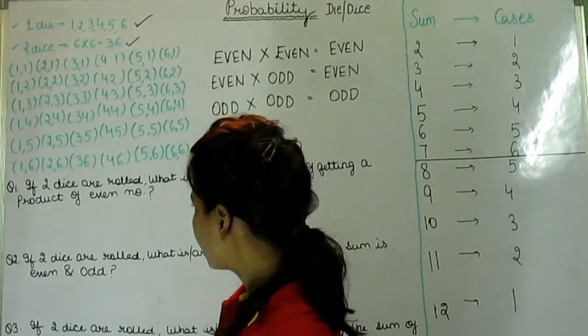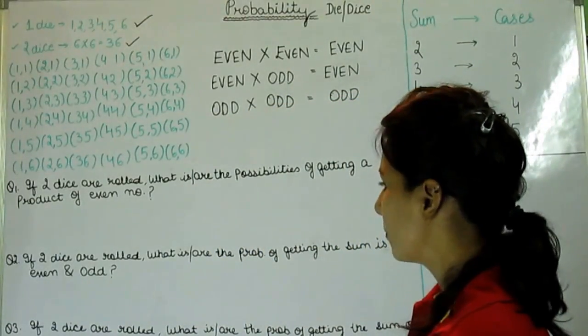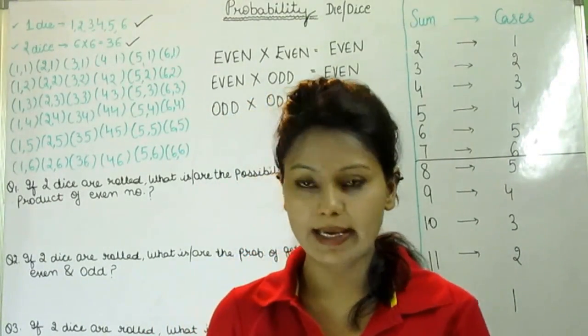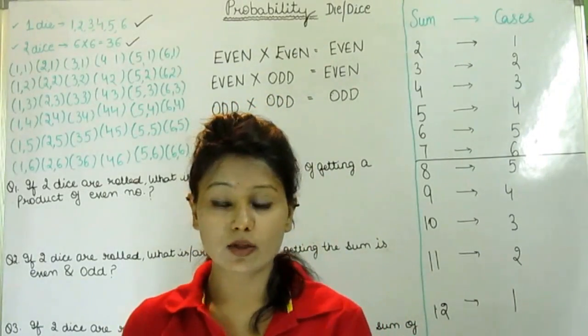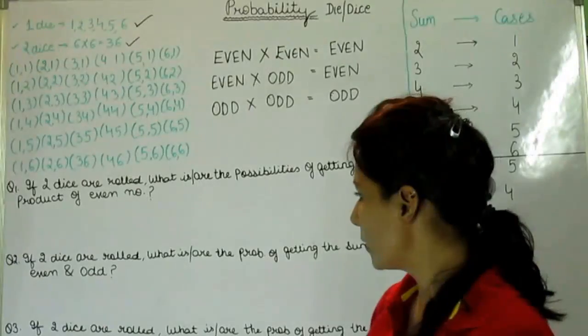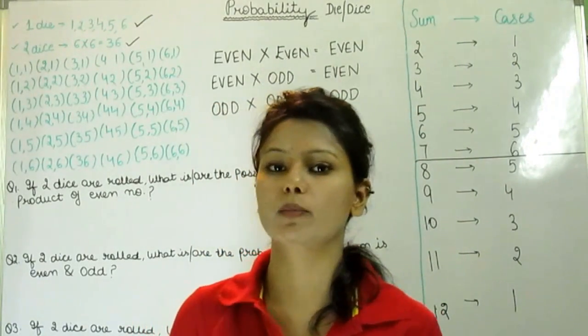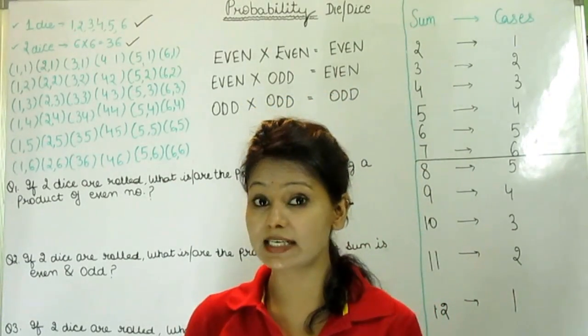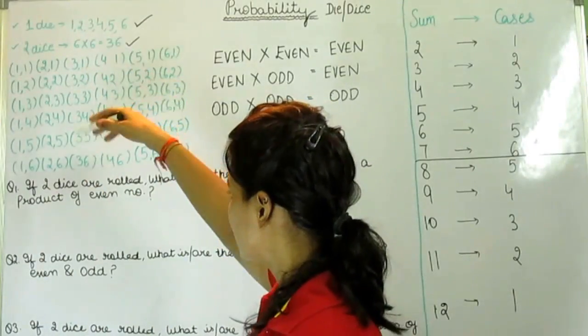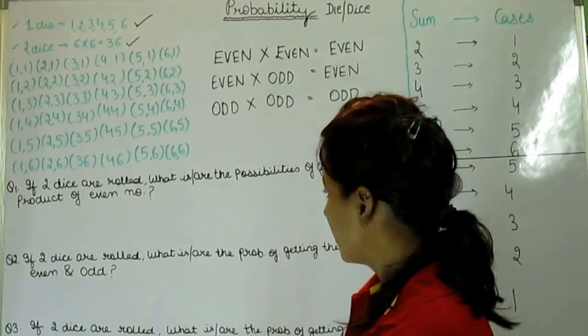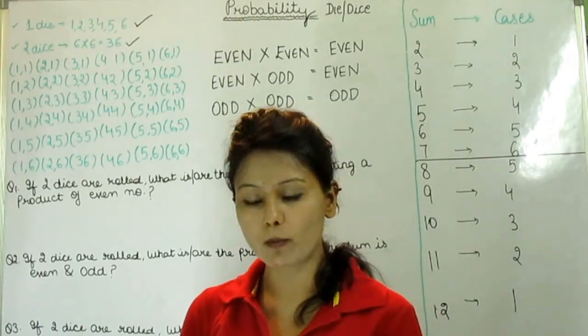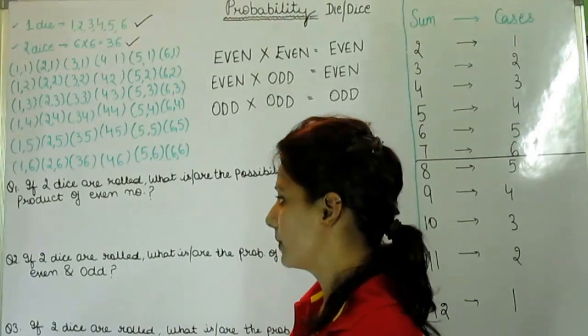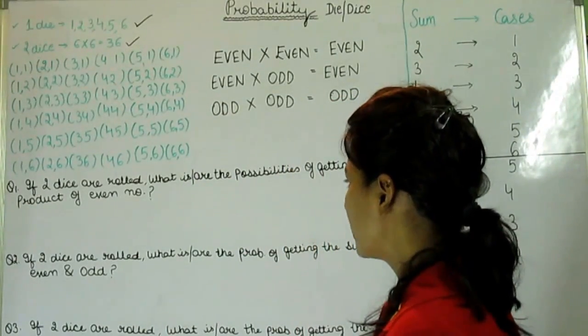If you have two dice rolled, what are the possibilities of getting a product of even numbers? If I have two dice rolled, one number will come, then one number will come. So what possibilities are that the number of the product is even number? If you want to multiply each other, you'll see that the number of the product is even number. This is an easy way to do it.